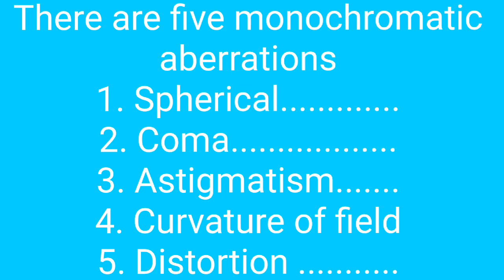There are 5 monochromatic aberrations. Number 1 is spherical aberration. Number 2 is coma or comatic aberration. Number 3 is astigmatism. Number 4 is curvature of field. And number 5 is distortion. Now let us discuss these 5 types of monochromatic aberrations and how each can be minimized.